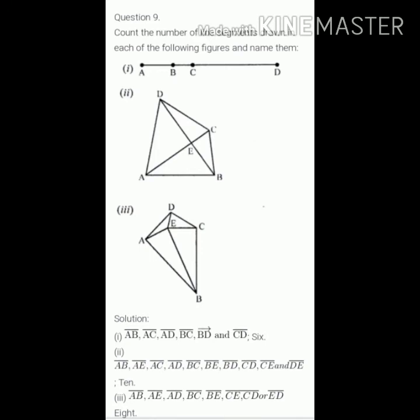Question number nine. There are three figures and they are asking to count the number of line segments. So in figure first, there are six line segments: AB, AC, AD, BC, BD, and CD.